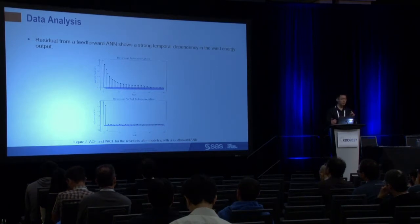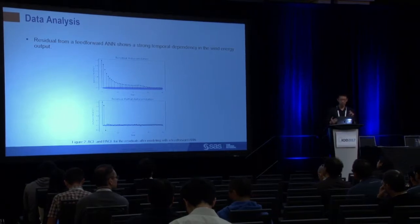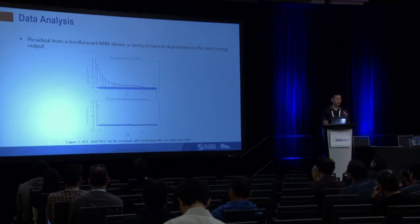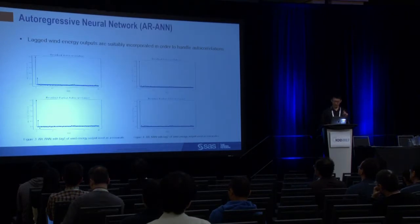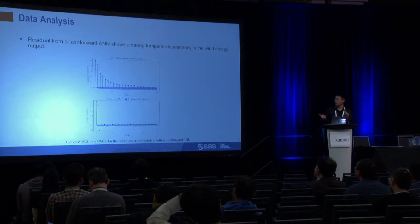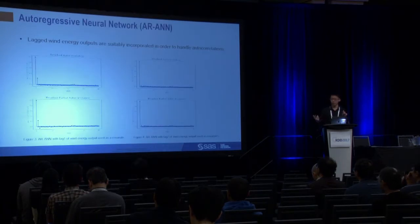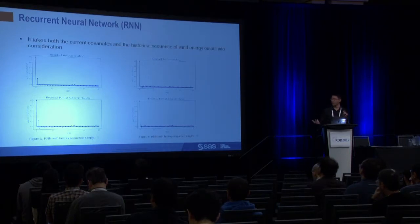We decided to either add lag variables as AR terms into the feedforward neural network — an autoregressive neural network — or feed previous history sequences into a recurrent neural network and concatenate with other covariates for forecasting. The partial autocorrelation function showing two lags is very indicative of how many lags to add. When you use enough lags, you sufficiently remove the partial autocorrelation in residuals, and this applies to both the autoregressive neural network and the recurrent neural network case.